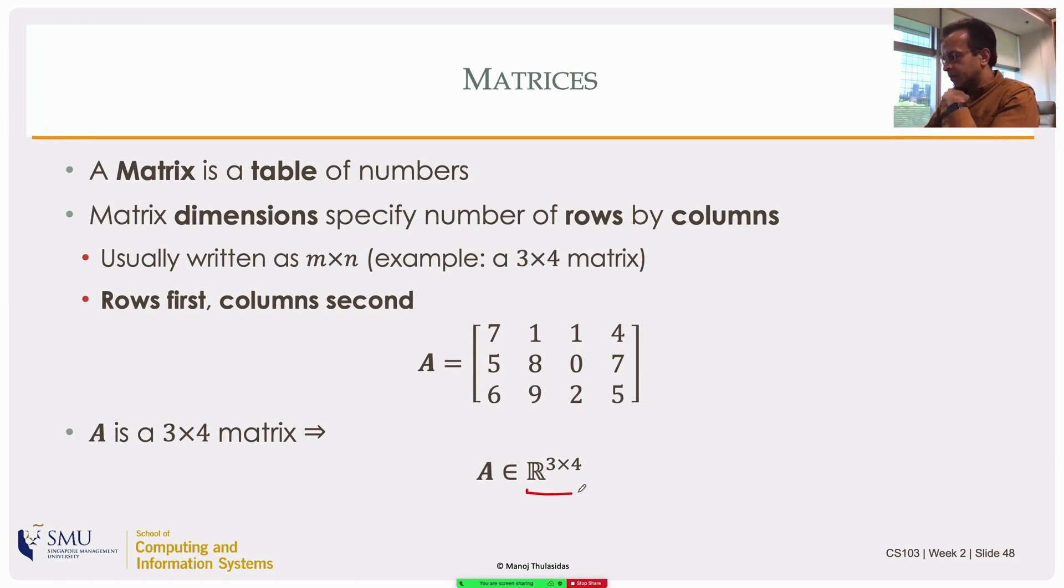A is a member of R three by four. That's the way I read this guy over here. It's not a power, it's just R three by four, which is the set of all possible matrices with real elements, three rows and four columns. A here is a member of that set.